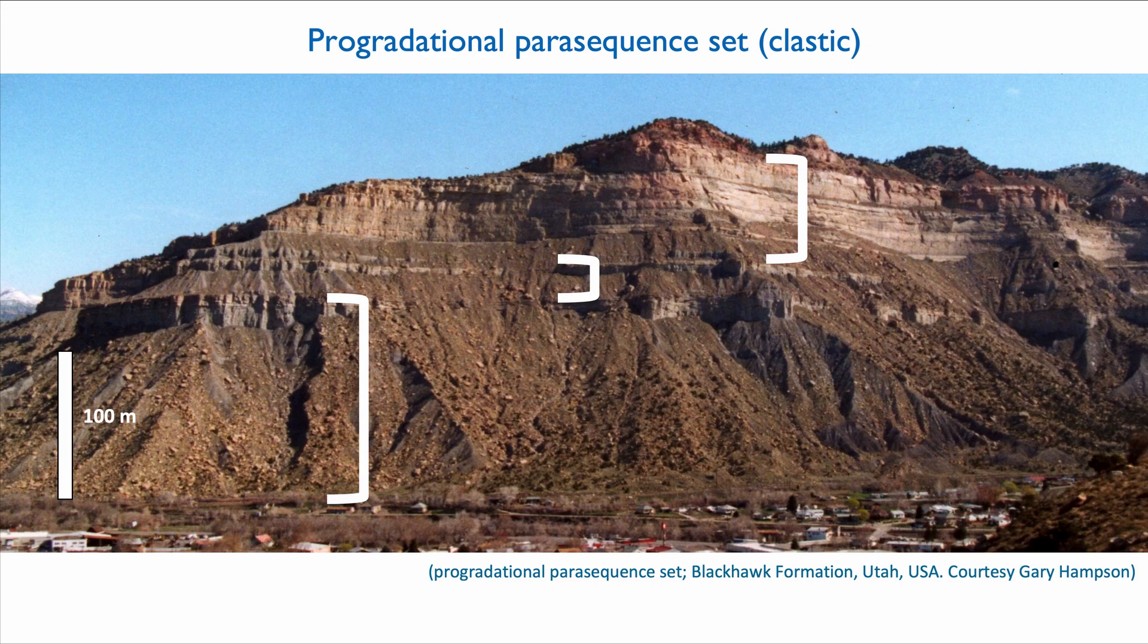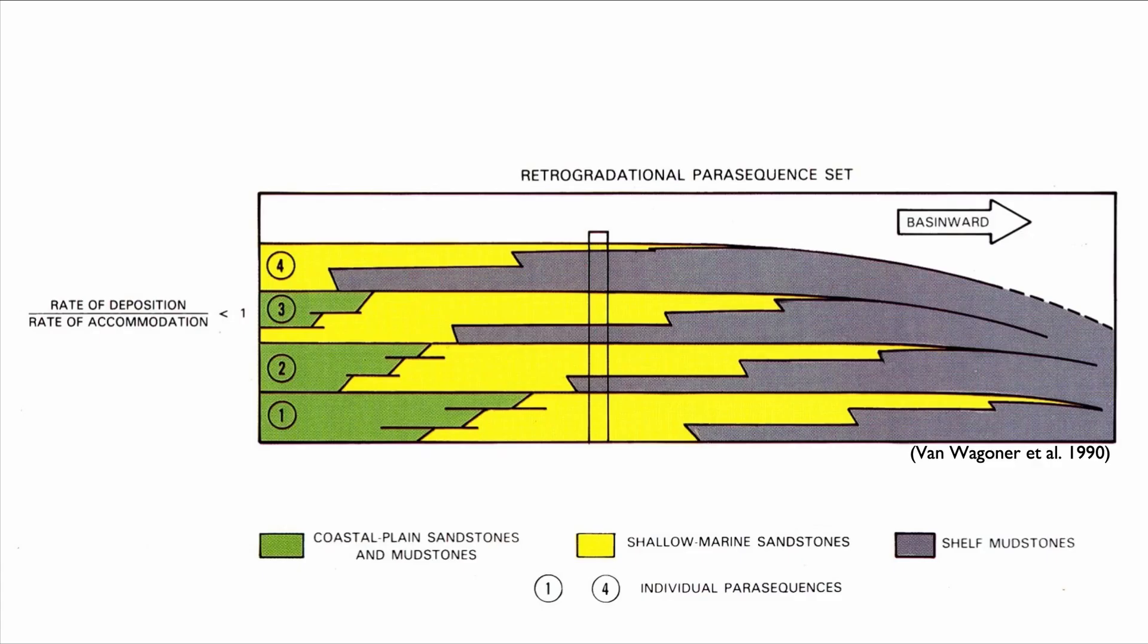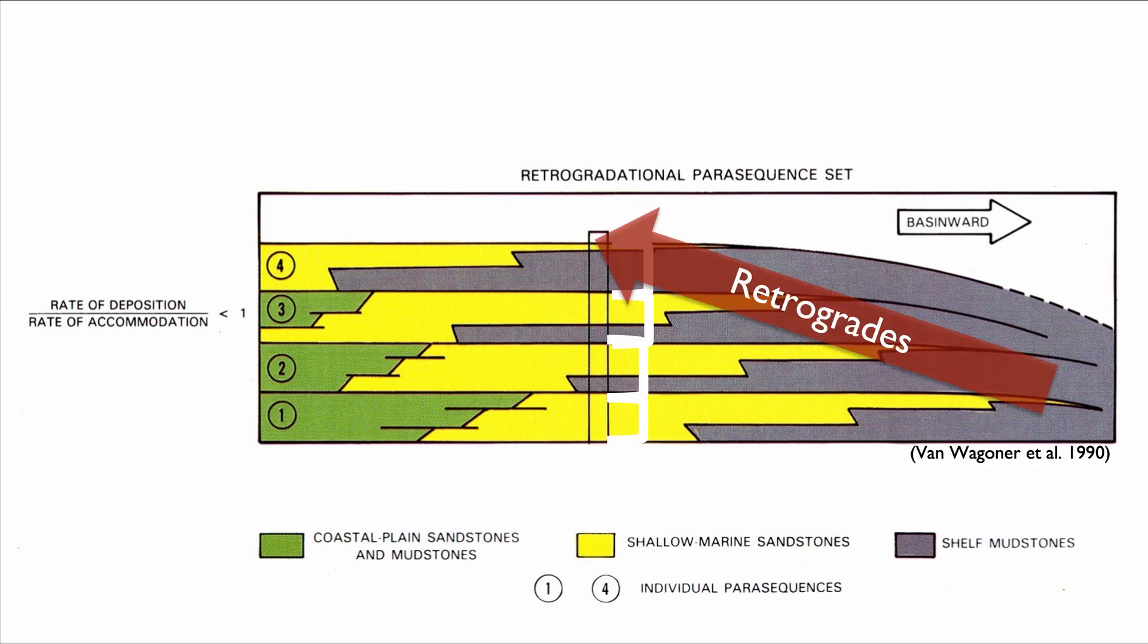Of course, we have other examples of parasequences. In this case, we have multiple parasequences, and notice that instead of becoming progressively more rich in sand, these become progressively less rich in sand, which by extension indicates retrogradation.